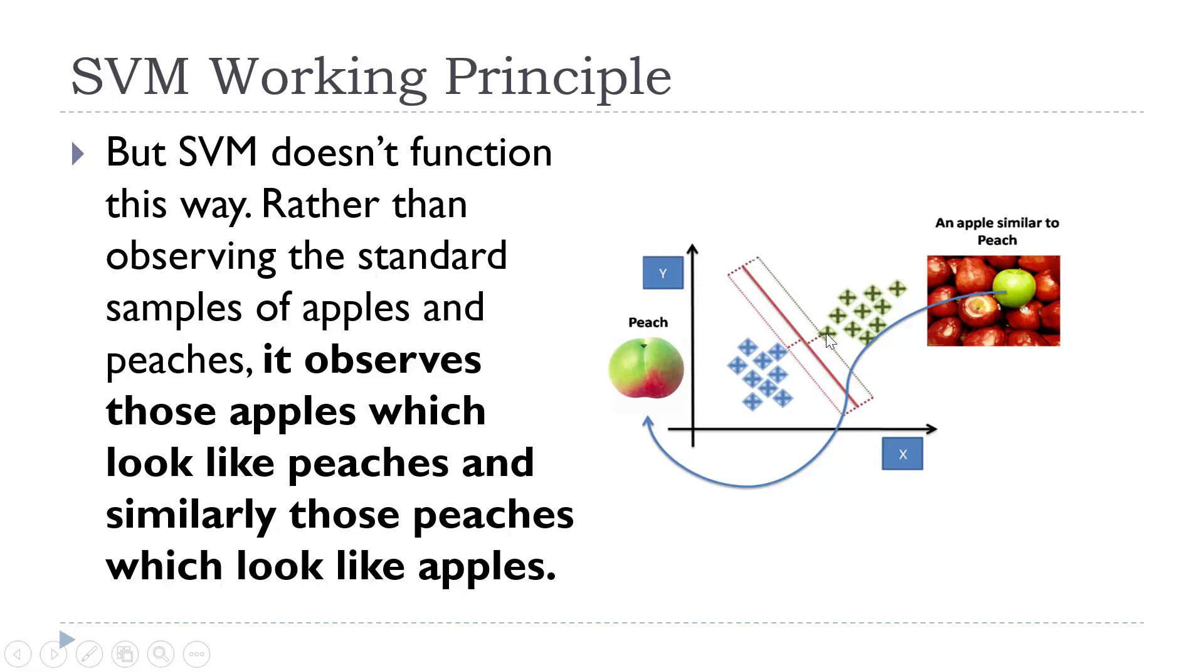So the focus here is on those apples which are very close to peaches and those peaches which are very close to apples. We are only considering these data points which are very close to each other. If we are able to do so, we will automatically be able to classify those standard apples as well as standard peaches.